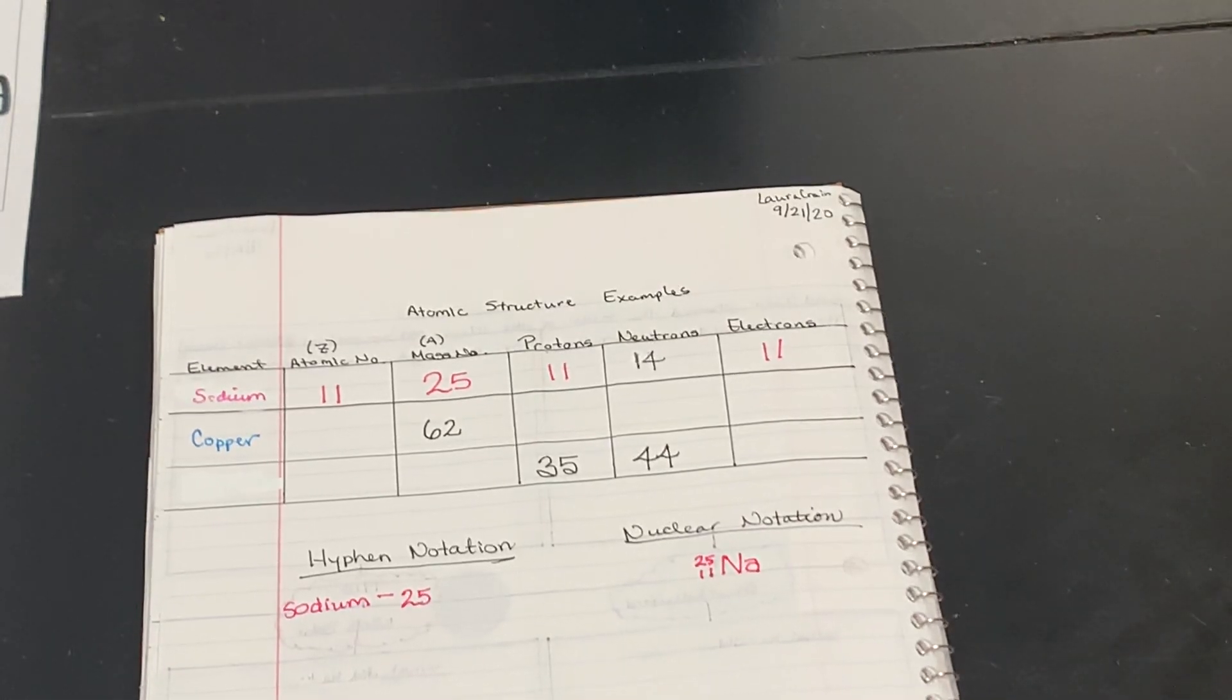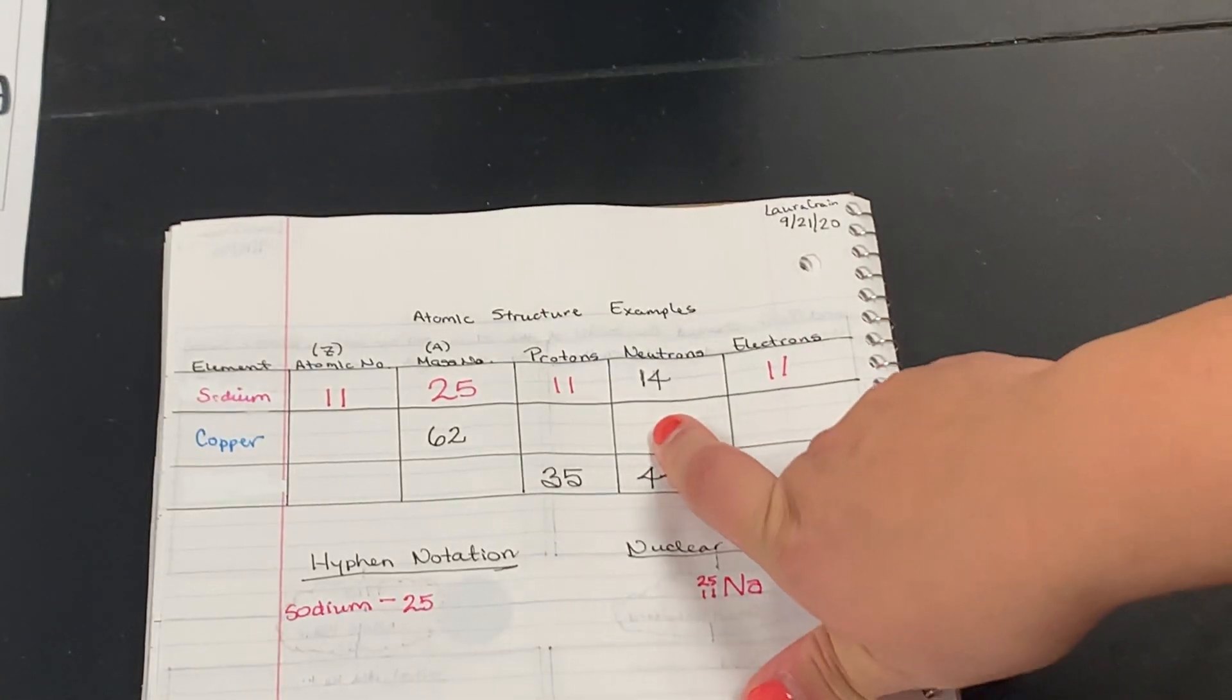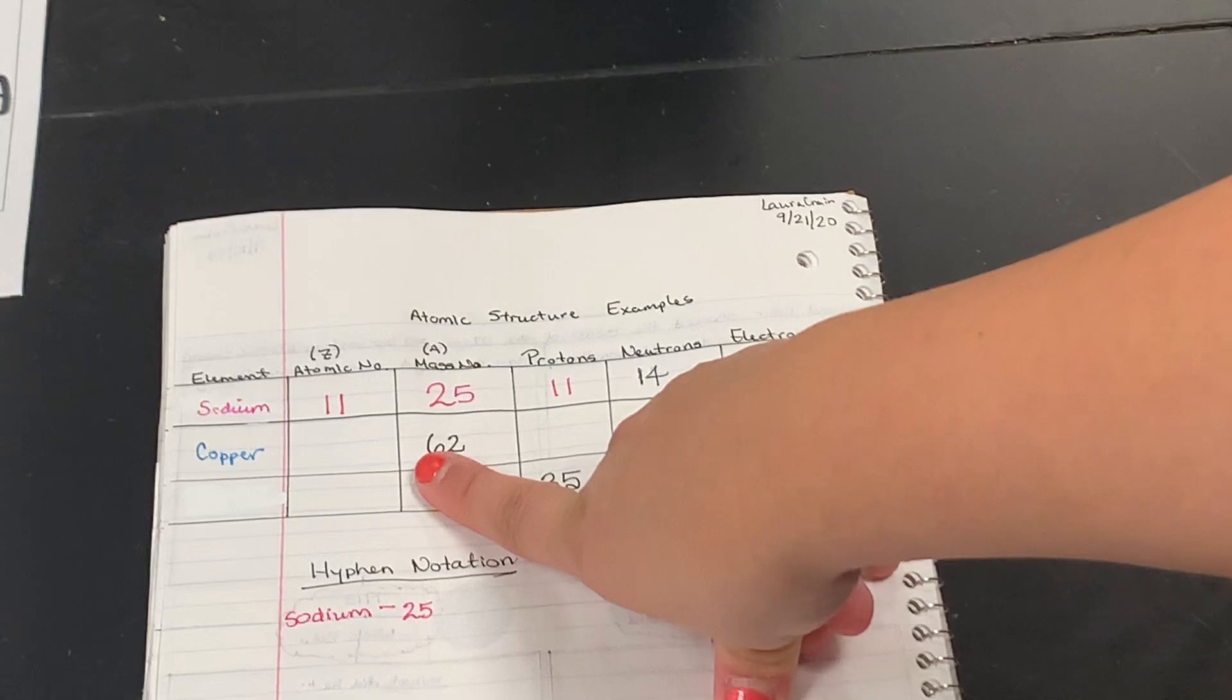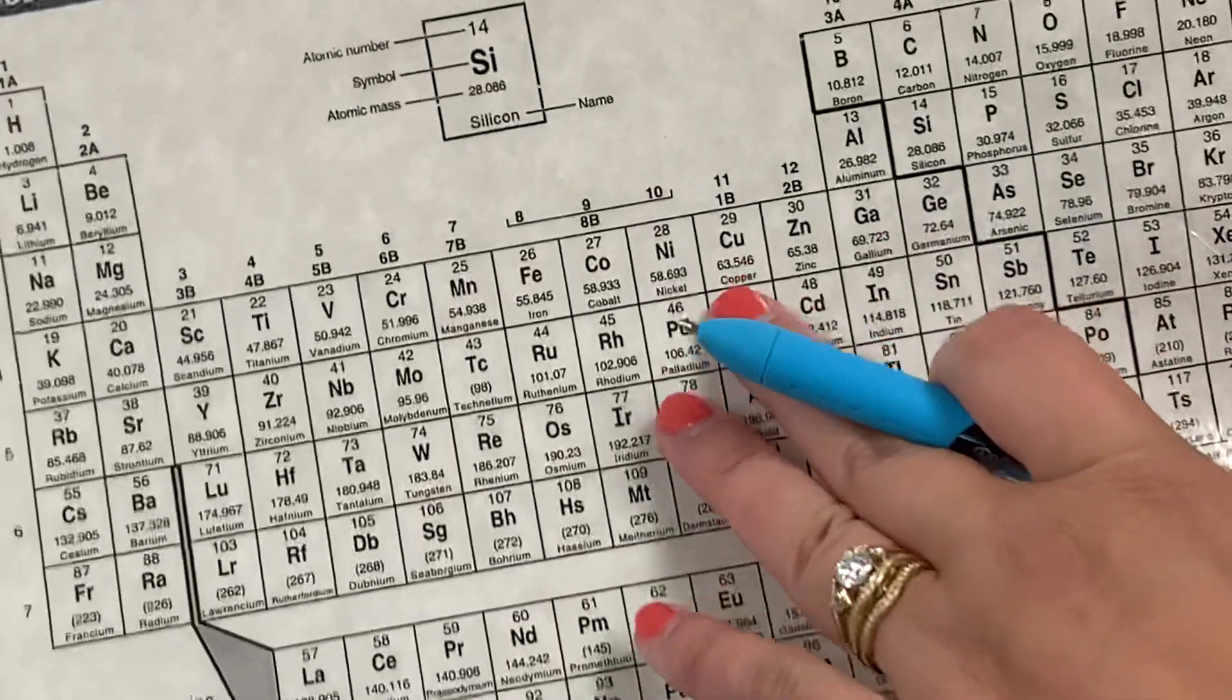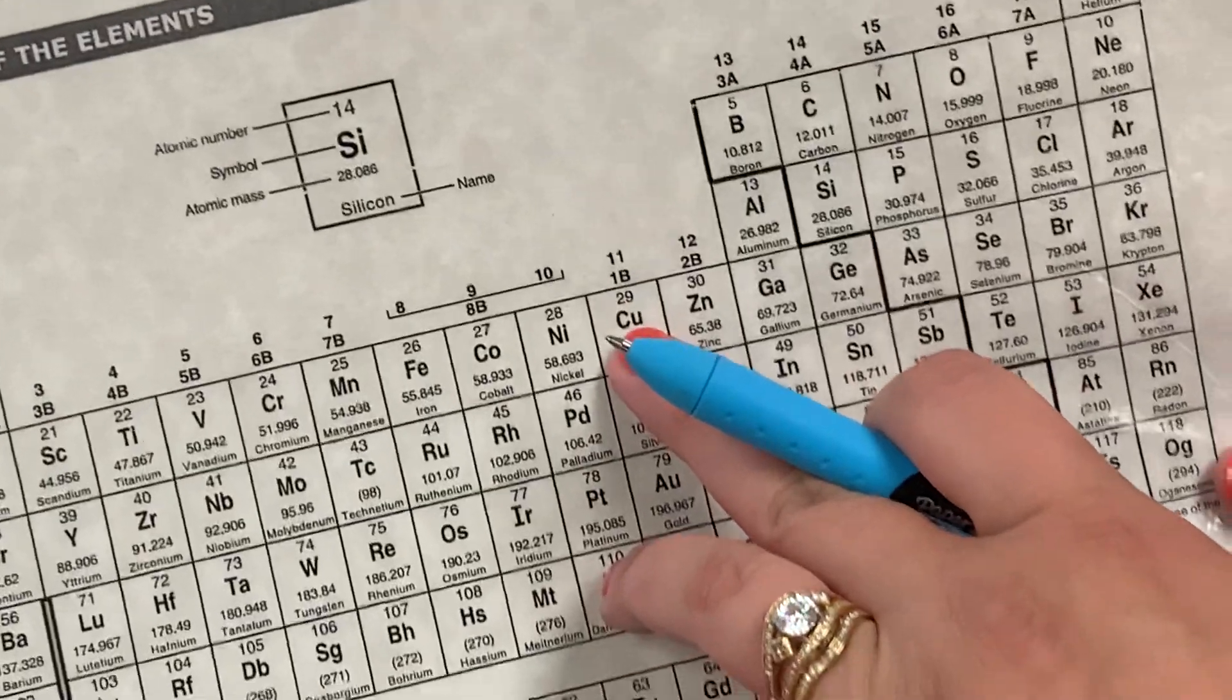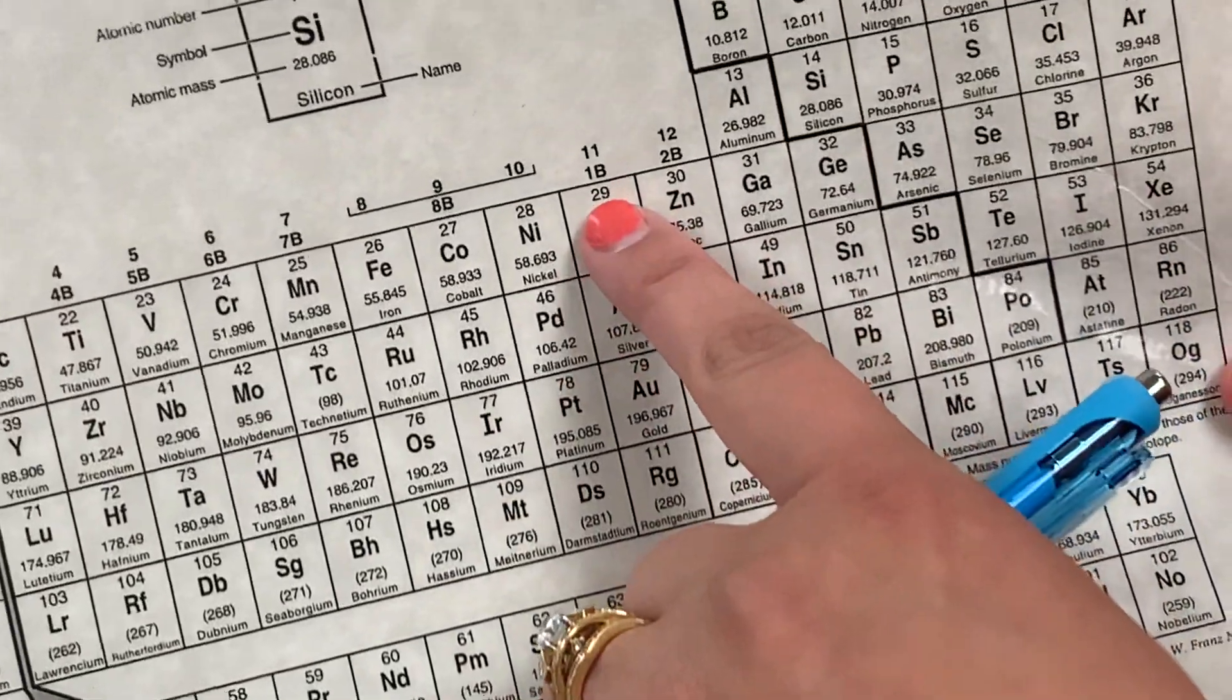Alright, well let's check out copper. This time they haven't told us how many neutrons we have, but they did tell us the mass number. So let's go find copper on our periodic table. Right here we have copper. The symbol for copper is Cu. Atomic number here is 29.